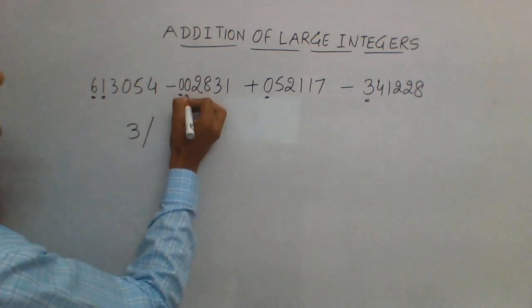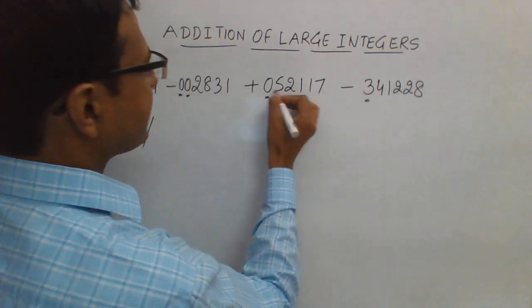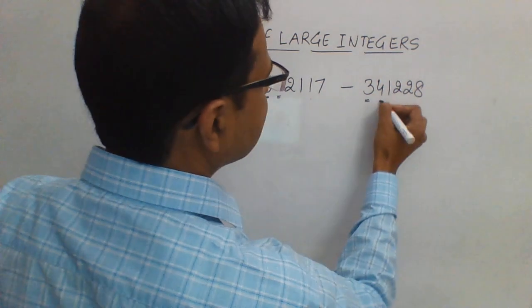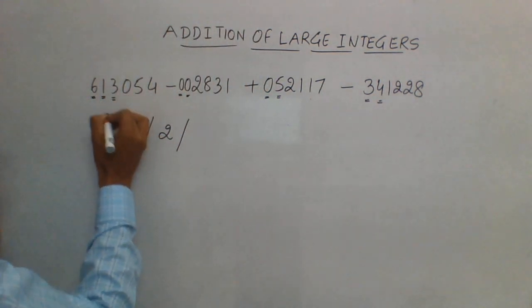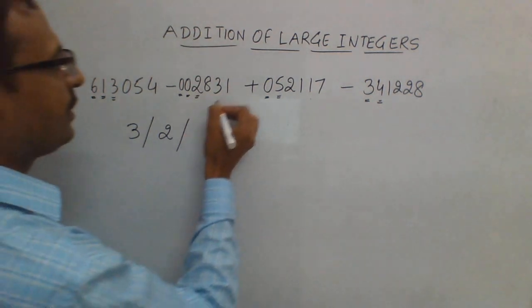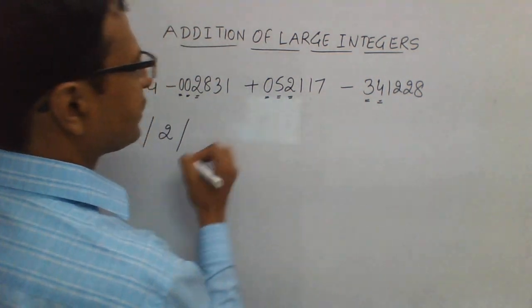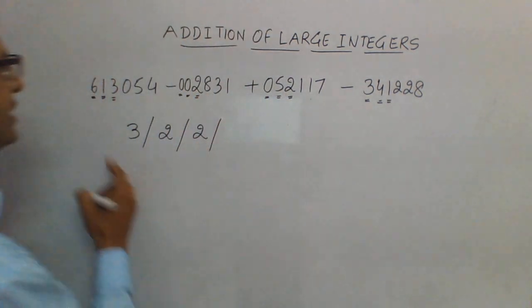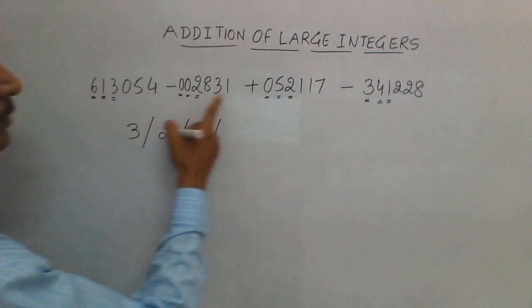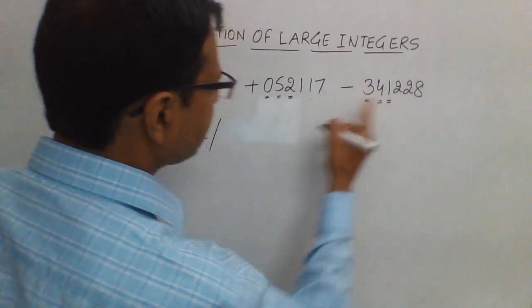Now 1 minus 0 is 1, 1 plus 5 is 6, 6 minus 4 is 2. Next, 3 minus 2 is 1, 1 plus 2 is 3, 3 minus 1 is 2. Once again, 3 minus 2 is 1, 1 plus 2 is 3, 3 minus 1 is 2.